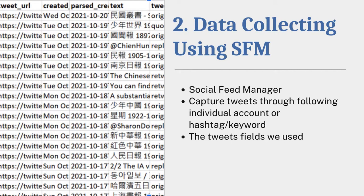In terms of initial data collection, we started with Social Feed Manager. We captured tweets through individual accounts, hashtags, or keywords. And we used a couple of specific fields that we thought would be the most helpful in forming metadata and creating a really great mapping tool for users. Some of those include the text, the tweet type, and URLs that are relevant — like a link to a database or a tweet.